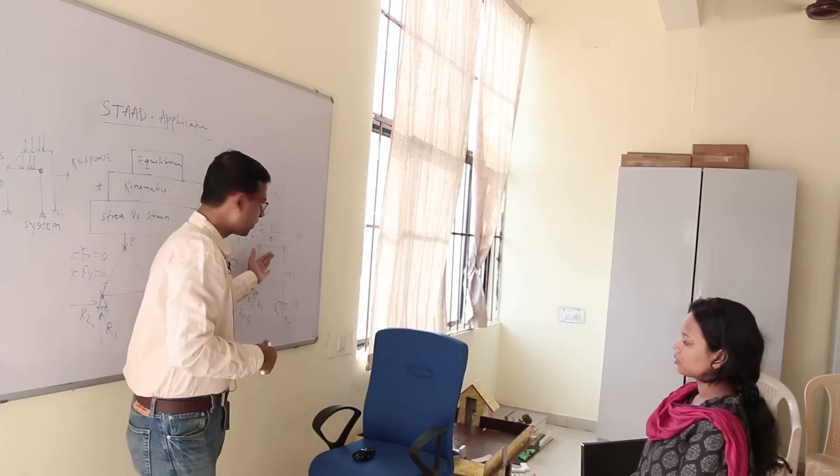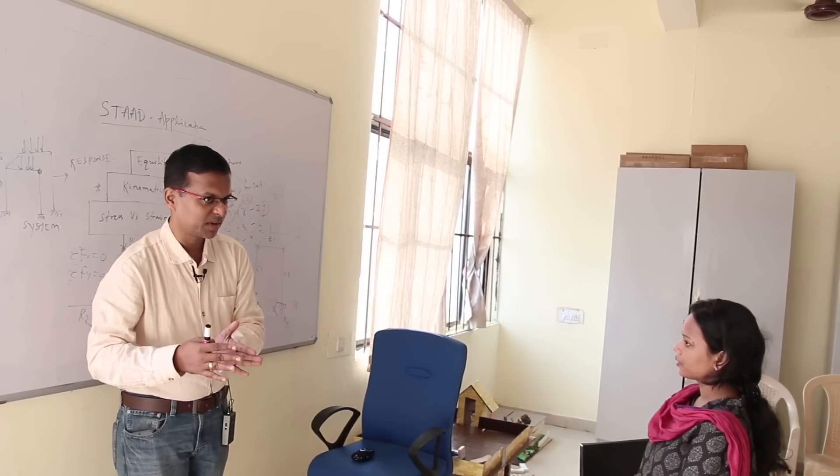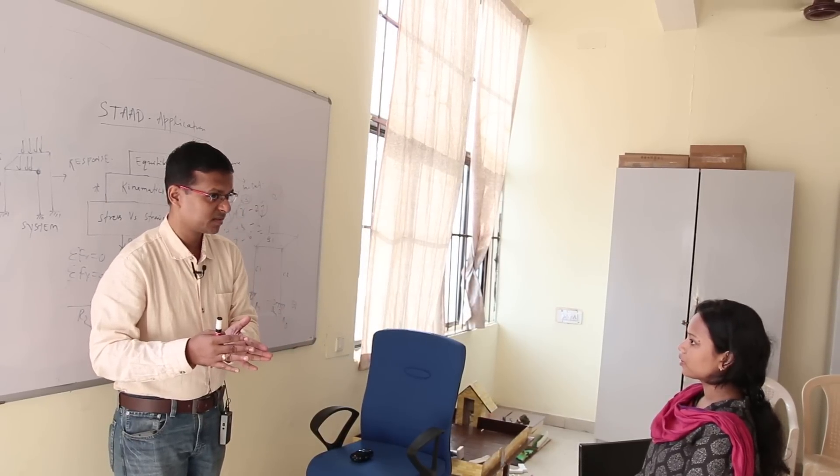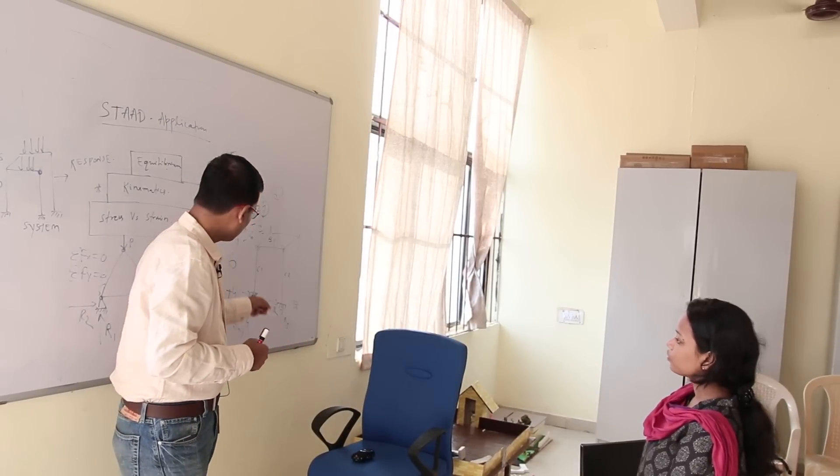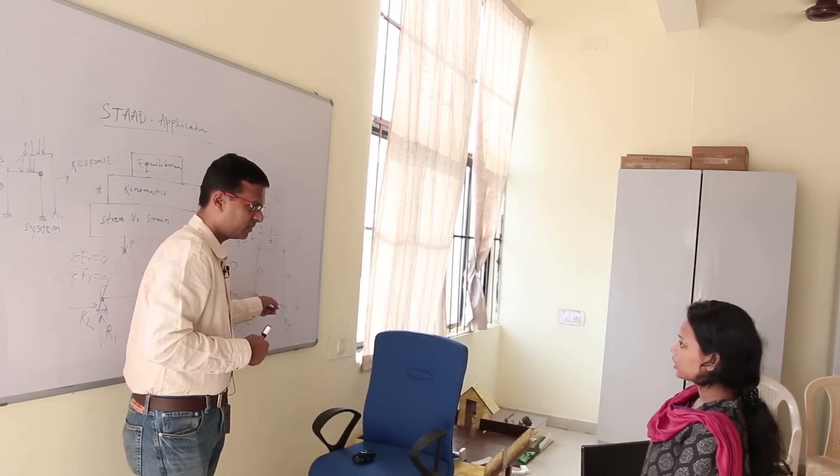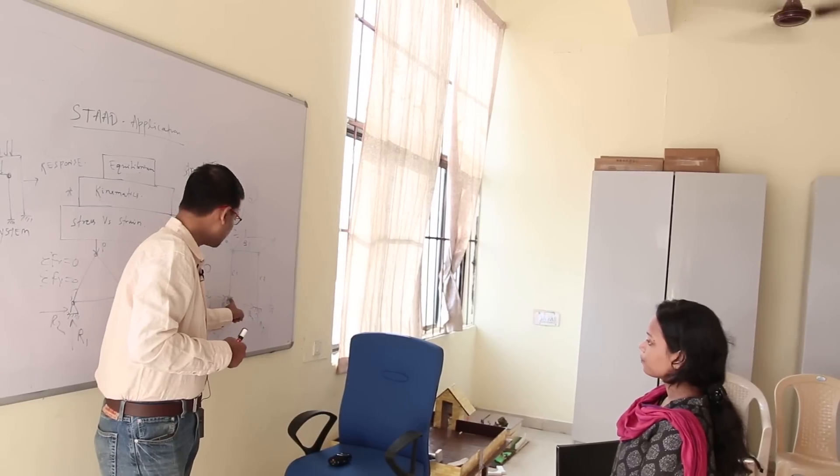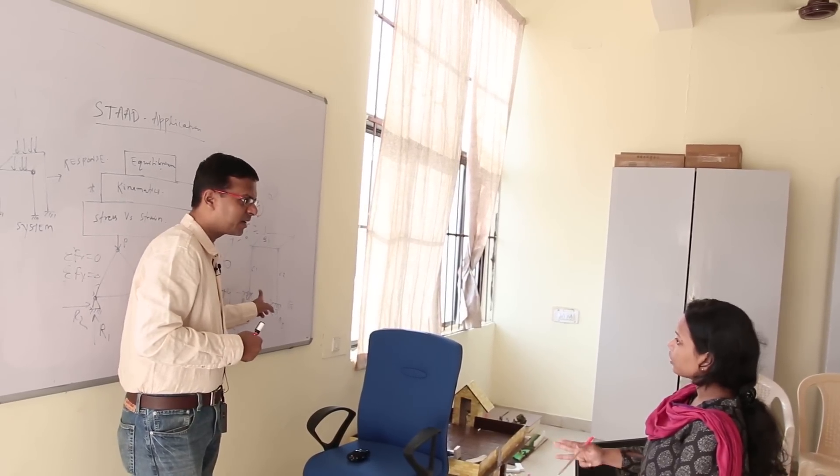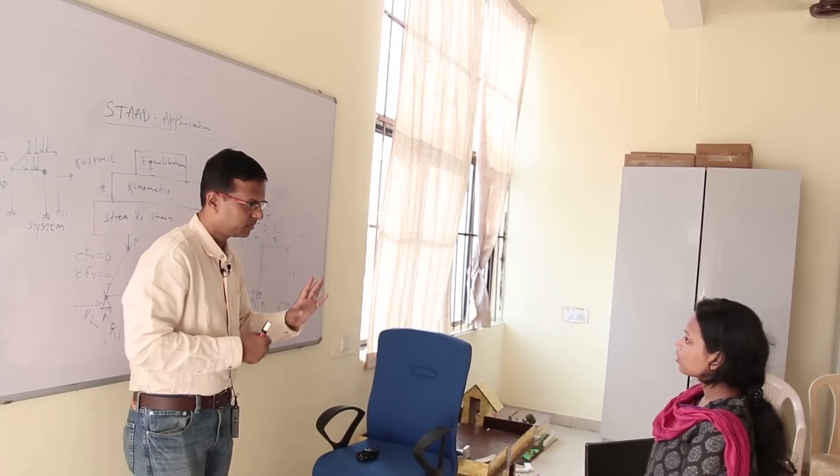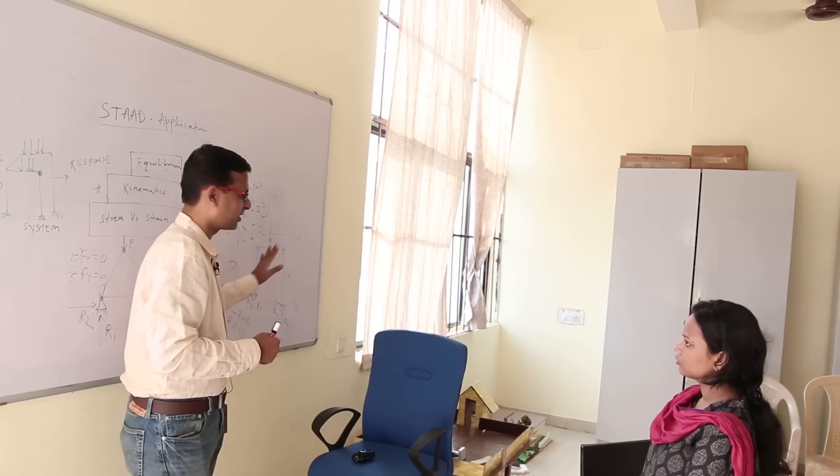But here this is a 2D, you know idealization, simplicity, simplifying the case. I am asking what was the support condition? This is a 2D condition. This is fixed. If this is fixed, you have how many degree of freedom? 6 degree of freedom, all 6 are 0, but as far as this particular condition is concerned.